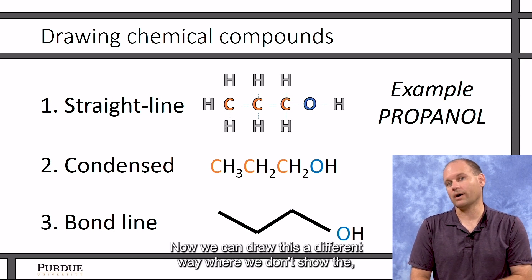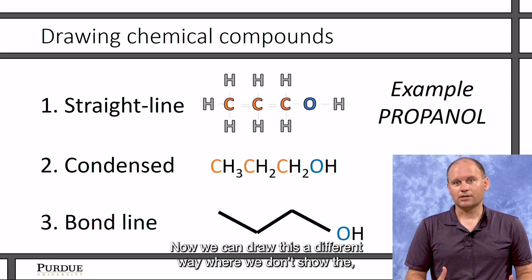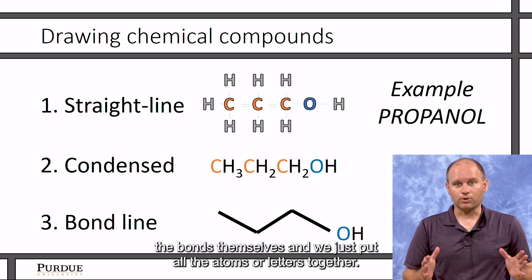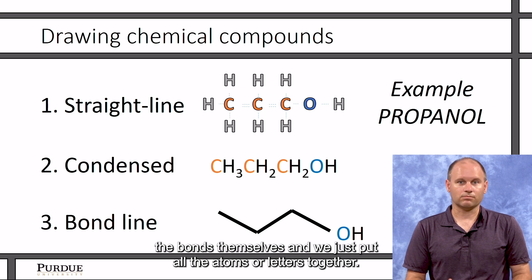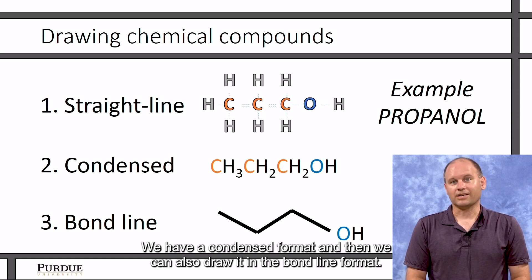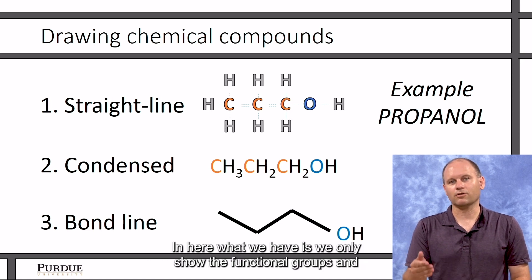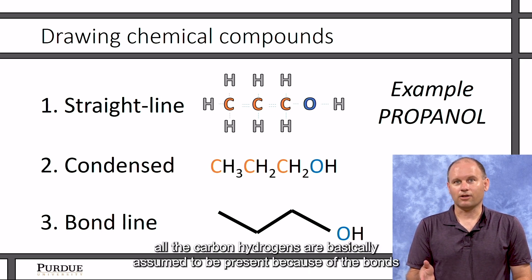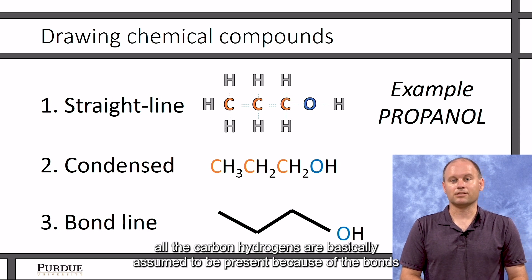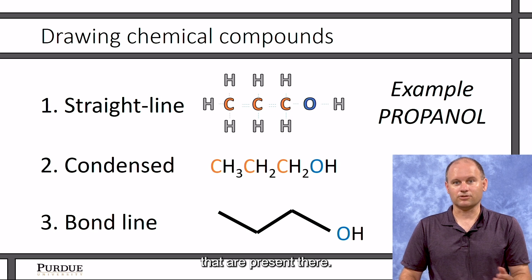Now we can draw this a different way where we don't show the bonds themselves and we just put all the atoms or letters together. We have a condensed format, and then we can also draw it in the bond line format. And here what we have is we only show the functional groups and all the carbon and hydrogens are basically assumed to be present because of the bonds that are present there. These are single bonds.